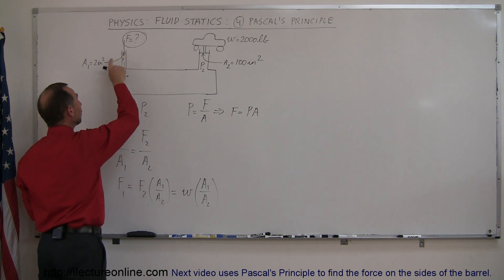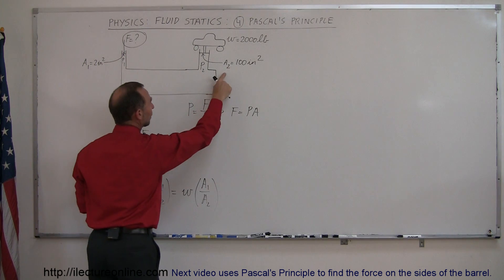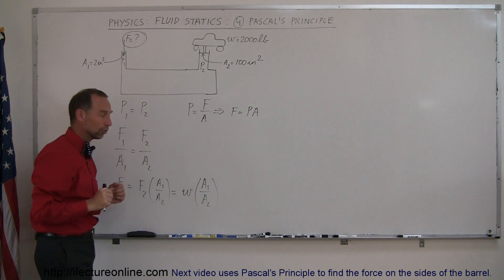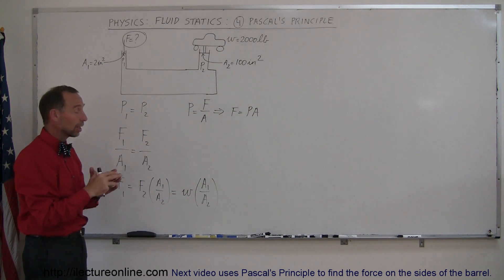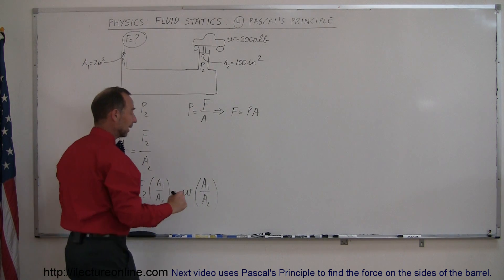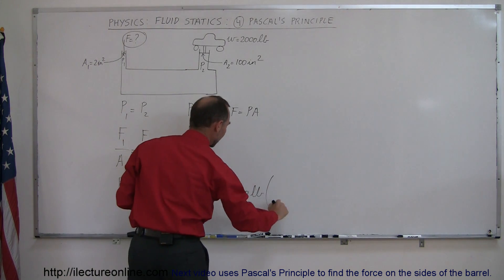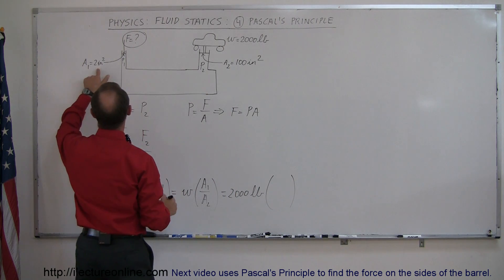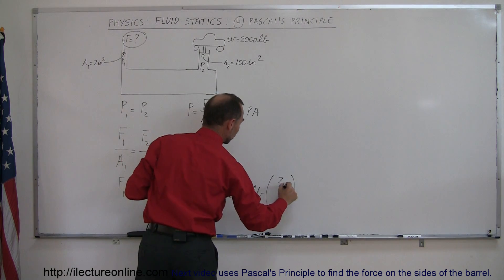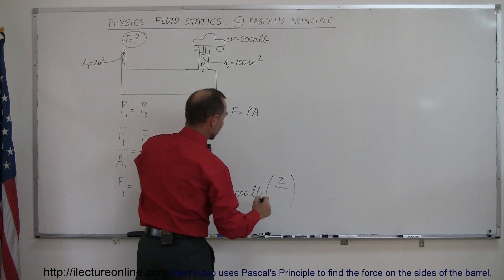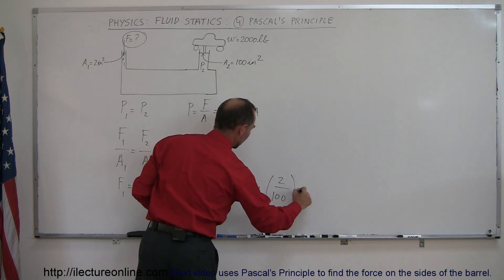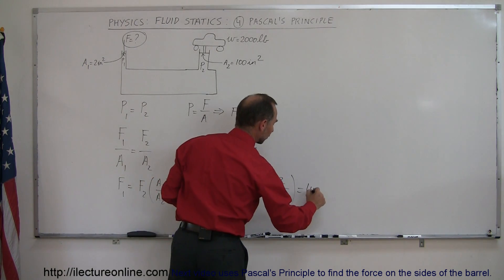And since A1 is much smaller, 2 square inches, versus A2 which is much bigger, 100 square inches, you can see then that you need a lot less force to lift up a car. And so this therefore is equal to 2,000 pounds, the weight of the car, times the ratio of the areas. The cross-sectional area here would be 2 divided by the cross-sectional area there would be 100. And so that would be equal to 40 pounds of force.